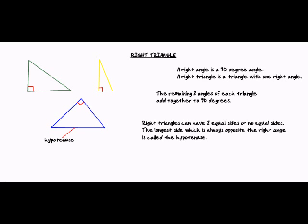And we can use something called the Pythagorean theorem to find out the length of all the sides. So the Pythagorean theorem is A squared plus B squared equals C squared, where C is the hypotenuse.